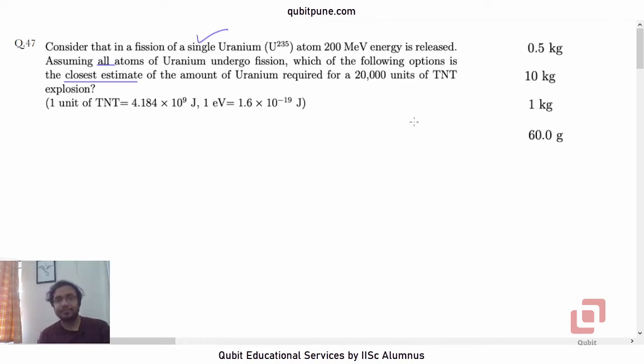This is a simple energy balance equation, no half-life involved here. Let us first calculate how much energy is actually released when we explode 20,000 units of TNT. So one unit corresponds to 4.184 × 10^9 joules, this is one unit of TNT, and how many of them are being exploded? 20,000. Because we want to find an equivalent energy in fission of uranium atoms, let us now assume that there are N such uranium atoms which will undergo fission.